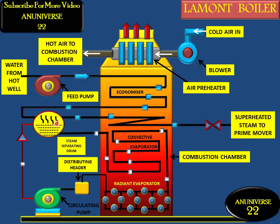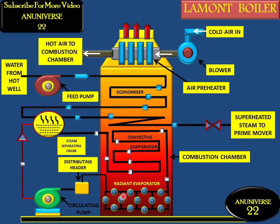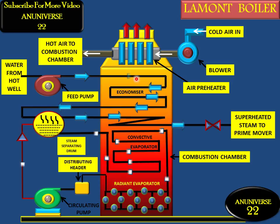The superheated steam is then sent to the prime mover. Water is again circulated back to the economizer, where it passes through the evaporator tubes again. Cold air enters with the help of a blower into the air preheater, where it is heated. The flue gases in the furnace first heat the evaporator tubes, then pass through the economizer to heat the water.